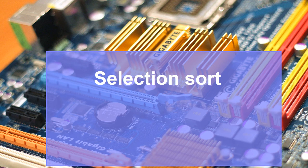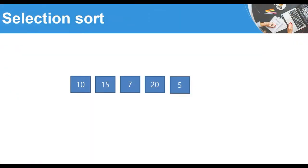This might sound a little complicated, so let's look at a more graphic explanation of how this algorithm works. We start with this simple list: 10, 15, 7, 20, and 5, and of course we want to sort this list using selection sort. Just to mention once again — selection sort is a simple sorting algorithm.